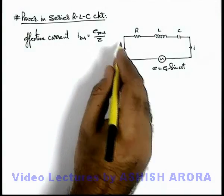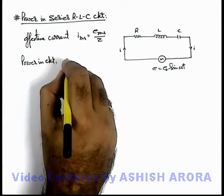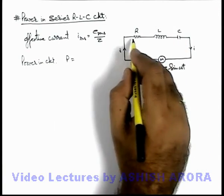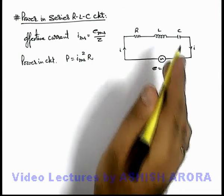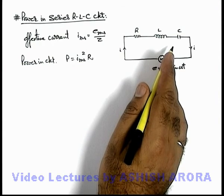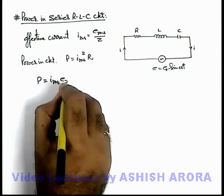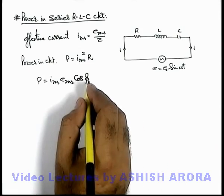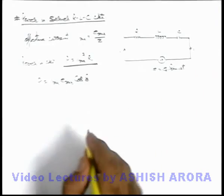If we know the value of I_rms, we can directly calculate the power consumption in the circuit. As we know, an inductor and capacitor never consume any average power — power is only consumed by the resistance. So the average power can be written as I_rms squared times R, since inductors and capacitors do not consume any power. This can also be expressed using the general relation I_rms times E_rms times cos φ, where cos φ is the power factor. But this average power will only be consumed by the resistance, so for any circuit, average power can directly be written as the total power consumed by the resistances of the circuit.